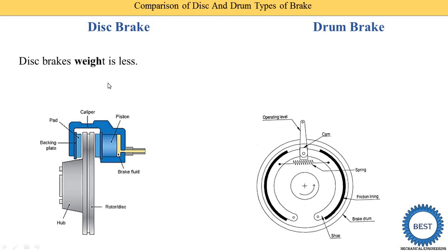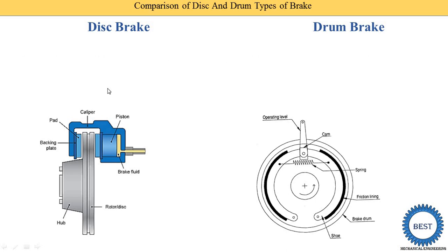The second point is about weight. The weight of the disc brake is less, while the weight of the drum brake is more compared to the disc brake.